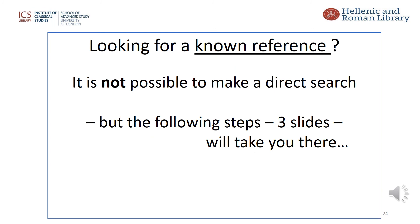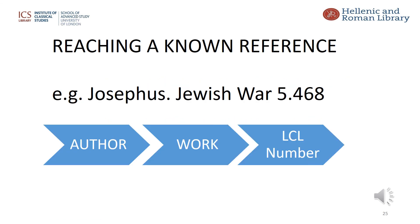At the beginning I said you can't go directly to a known reference in a text, but it is possible to do this, and the following three slides show this process. I have taken the example of Josephus, Jewish War, Book 5, Line 468. Step 1: browse to select the author, follow through to the title of the work, and click on the Loeb Classical Library number.